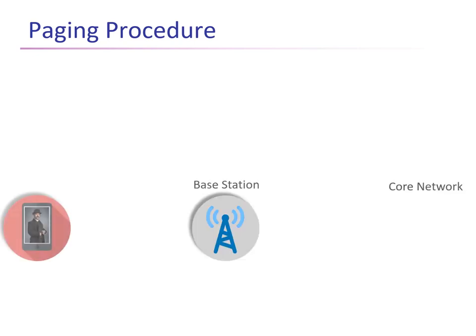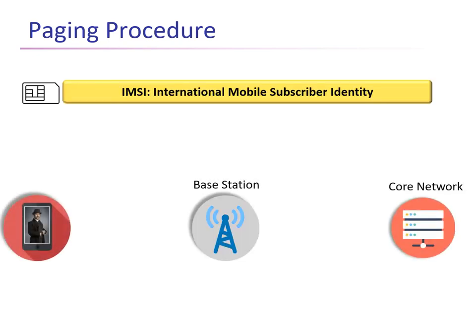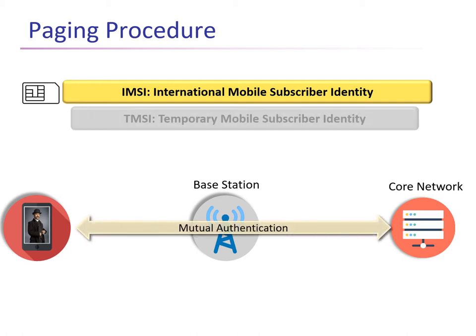First let's look at the functioning of the paging procedure and why it is required for cellular networks. Every cellular device is provided with a permanent IMZ number, or International Mobile Subscriber Identity, by the core network. The cellular device uses this IMZ to connect to the core network through the base station, and after mutual authentication, a TMZ number is provided to the cellular device. This is a temporary mobile subscriber identity used for any subsequent communication.